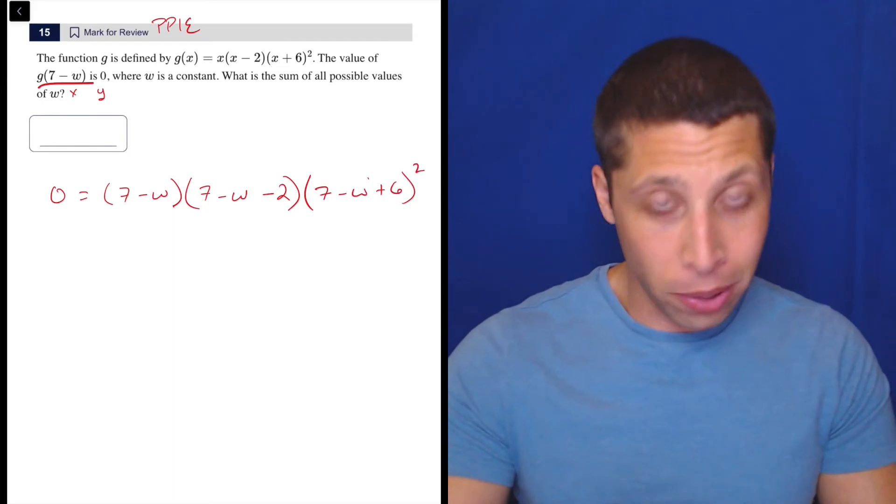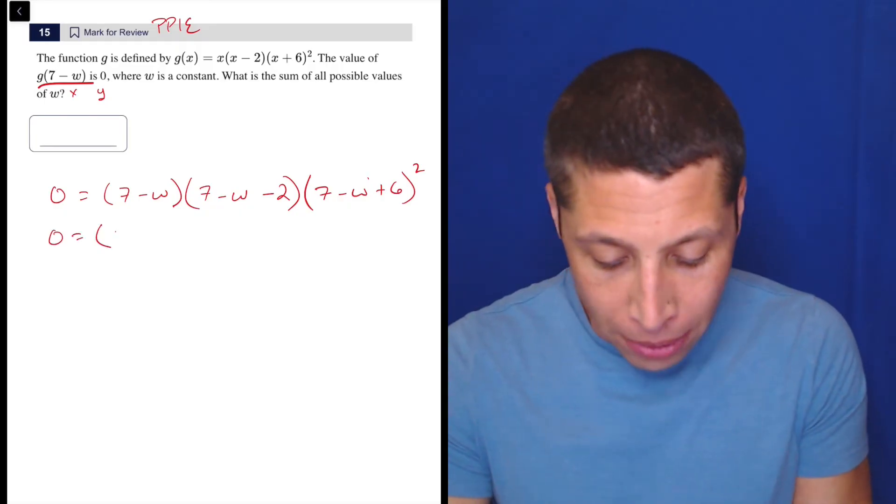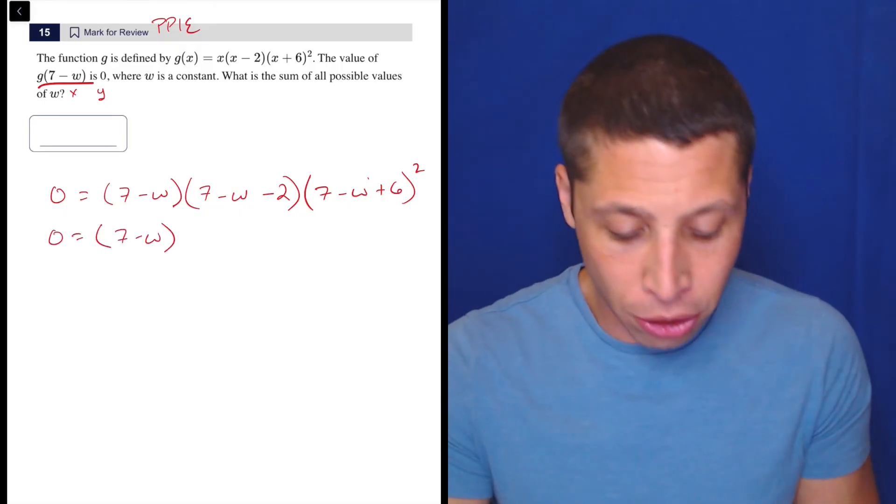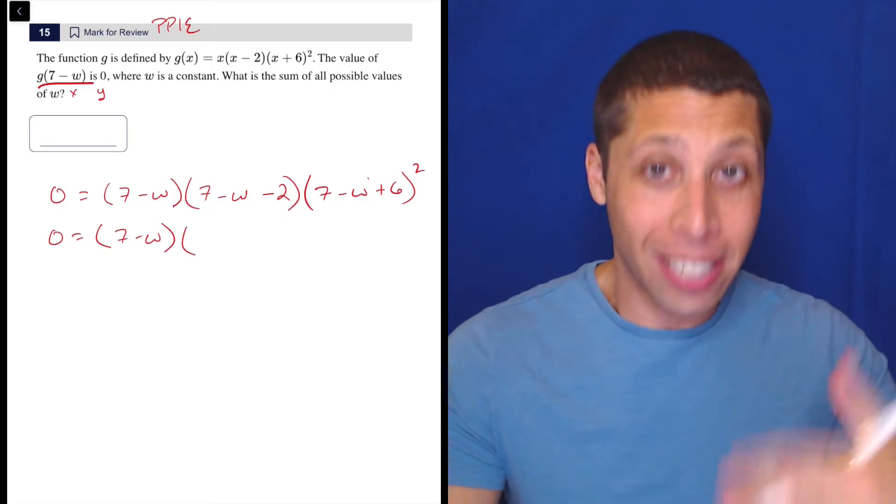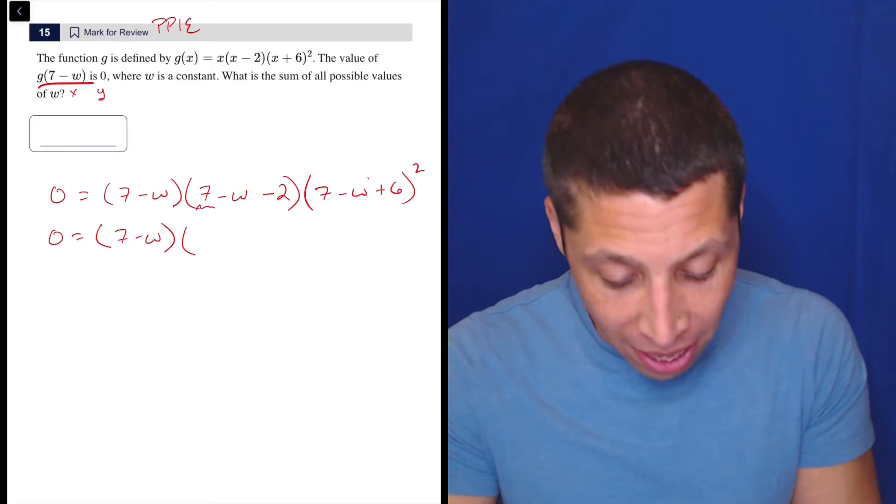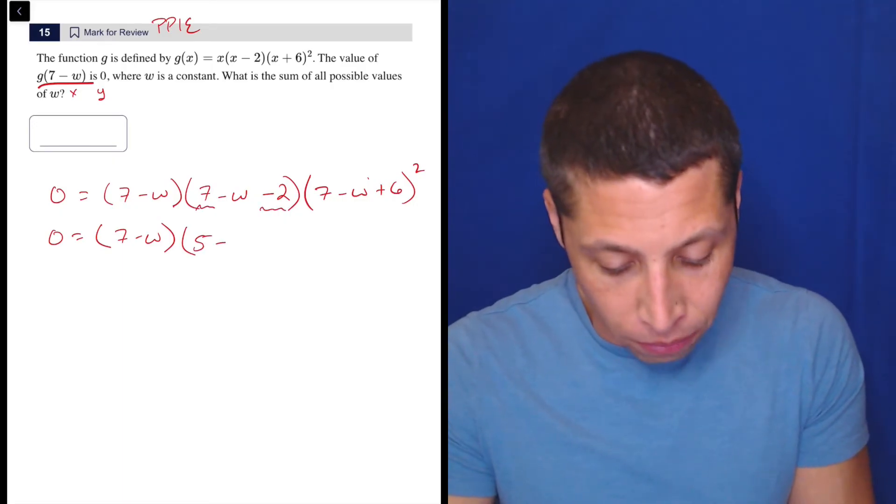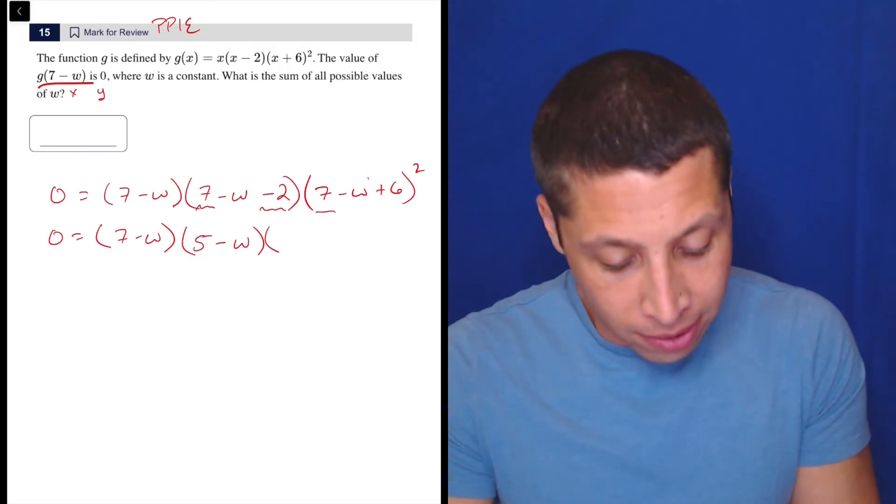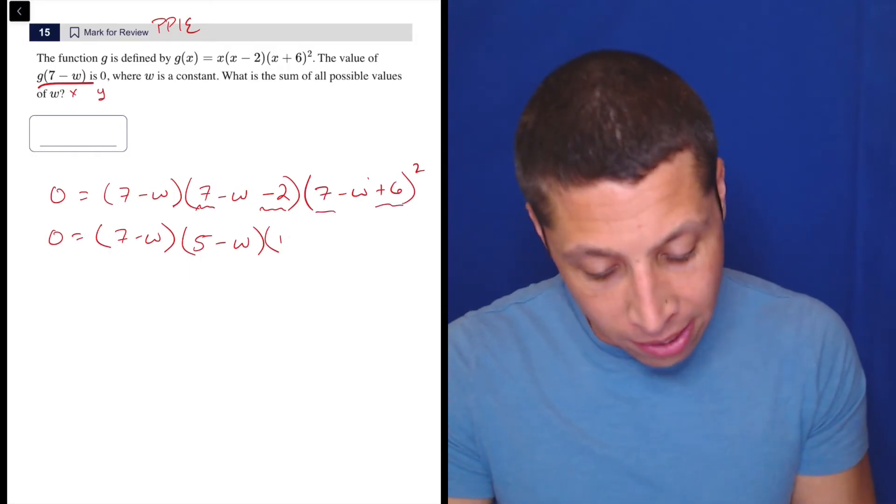So we'll deal with this messiness in a second, and then 7 minus w plus 6 squared. So I'm not going to start foiling things out, I'm just going to start to clean up each of these individual factors because I want to keep them as factors. So 7 minus 2 is 5, and 7 plus 6 is 13.